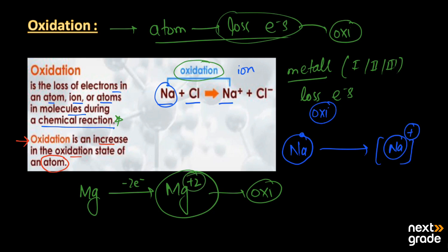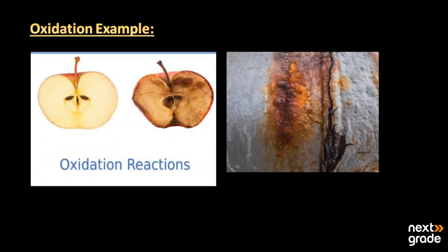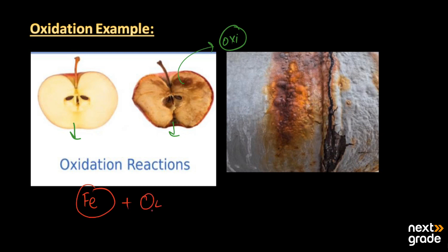There are daily life examples of oxidation. If we cut an apple and keep it in the open environment for some time, we observe that it starts to change color from white or off-white to brown or dark brown. This happens because the apple contains iron, and when this iron reacts with atmospheric oxygen in the air, it changes into iron oxide, which has a dark brown color — this is the process of oxidation.